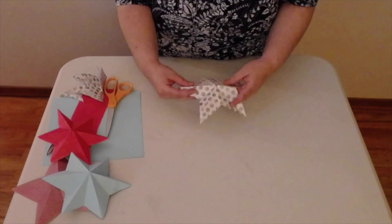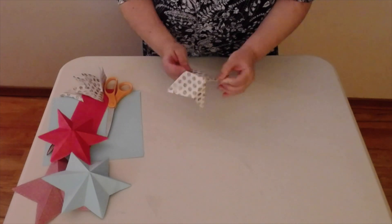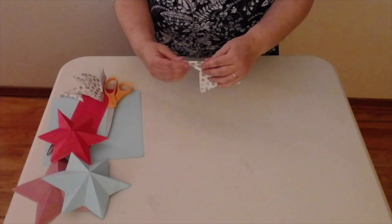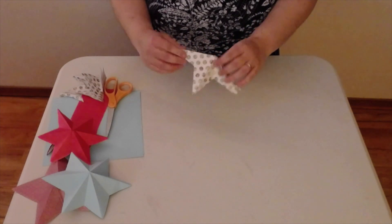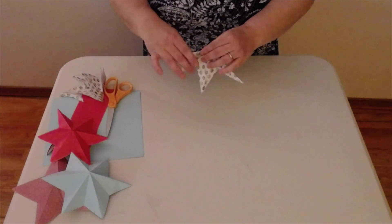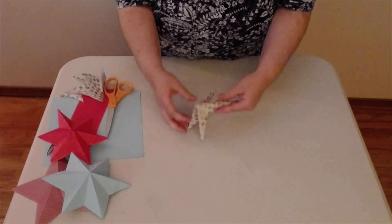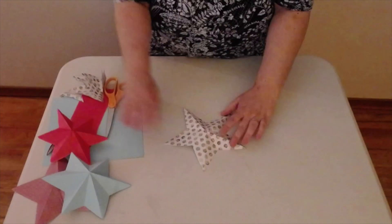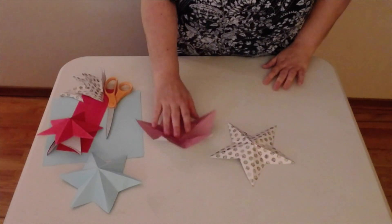And then we repeat the same thing that we did earlier with our six pointed star where the big pieces, the long sides, fold those up and in between pieces get folded back. Long sides get folded up and in between pieces get folded back. You can do that. And there you go. So we've got our six pointed star and our five pointed star.